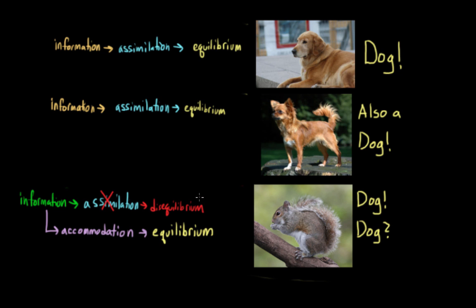And so at this point maybe you ask your parents and they inform you that, nope, this is not a dog. This is in fact a squirrel. And so now you have a concept where you didn't have one before. Now you have this notion of squirrel. Now you have a new schema. And because you have a place to put this new information you are now returned to a state of equilibrium.